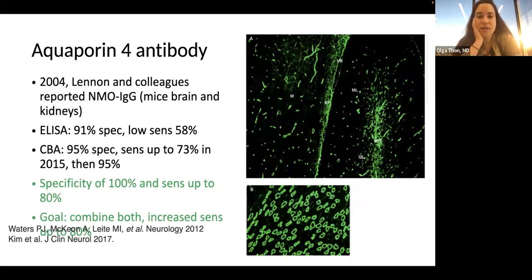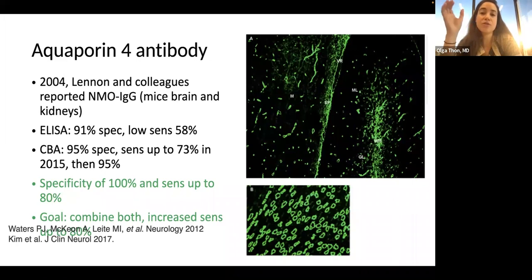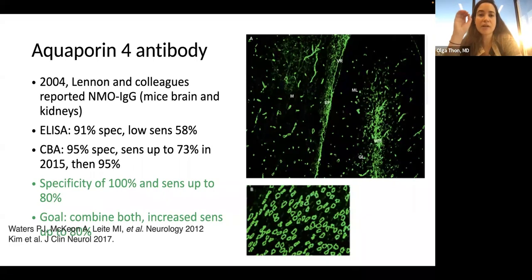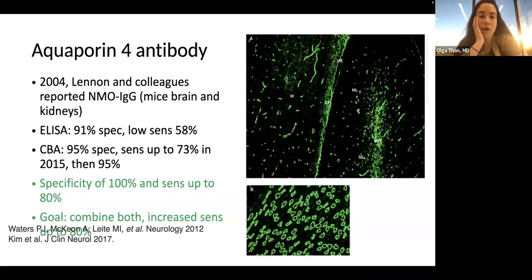So what was the big change that Natalia Rost was talking about? The aquaporin-4 antibody was first described back in 2004 by Lennon and his colleagues. They reported the neuromyelitis optica antibody in the brain and kidneys of mice. It's an antibody against a channel seen both in the brain and in the kidney, because it has to do with the flow of water inside and outside of cells.